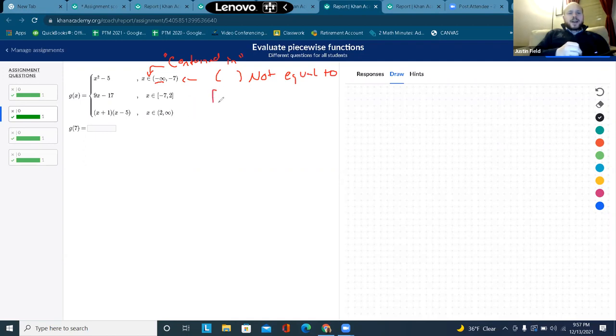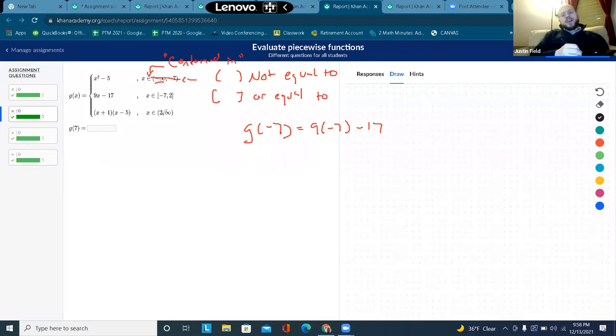So like, negative infinity to negative 7, not equal to negative 7. So if I substitute in negative 7, I'm not going to use this one, because it has a parenthesis. This one has a bracket, so that means it includes negative 7 and negative 2. So anyway, I will use the second one for negative 7. And this one does not include 2, so I would use the middle one for 2. And then anything above 2, I'll use this function right here.